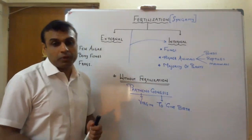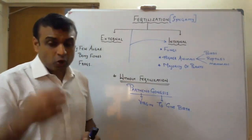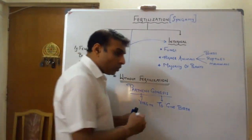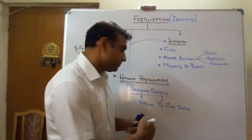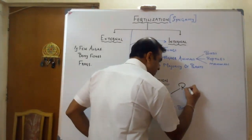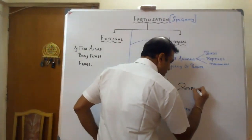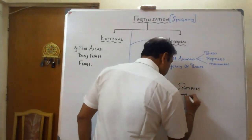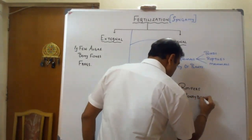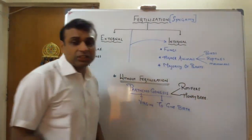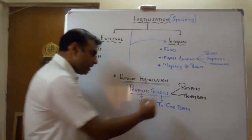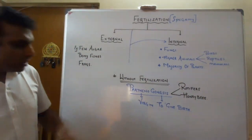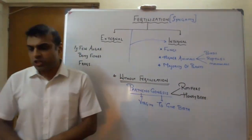Parthenogenesis is observed in honeybees and in a microscopic organism called rotifers. In these organisms, fertilization is not required, but young ones are still formed directly from an egg. This event is called parthenogenesis.